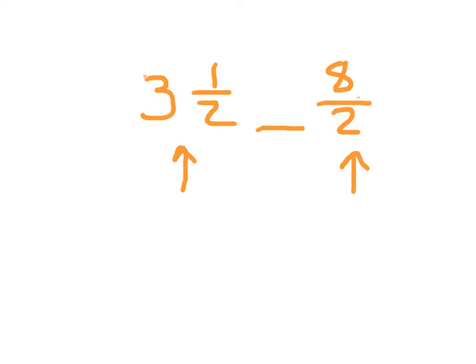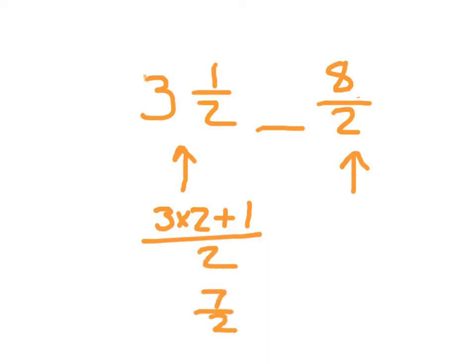If we want to change 3 and 1 half to an improper fraction, each of the wholes is worth 2 halves. So 3 wholes is worth 6 halves. Put it together with the 1 half, and that is 7 halves. We get 7 halves comparing it with 8 halves. Since the denominators are the same, 7 is less than 8, so we go ahead and place a less than sign there.